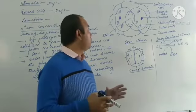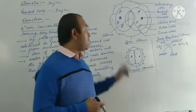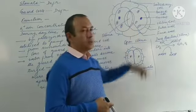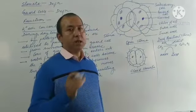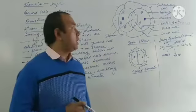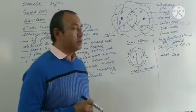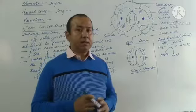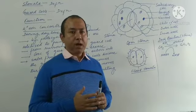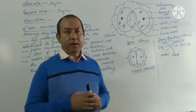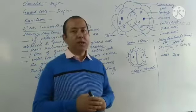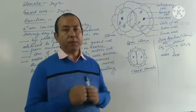Whether the stoma will open or close depends on the guard cells. The outer wall of the guard cell is thinner whereas the inner wall is thicker. Guard cells assume different shapes in dorsiventral and isobilateral leaves. In dicot leaves, guard cells are usually kidney-shaped, or more correctly, reniform-shaped.